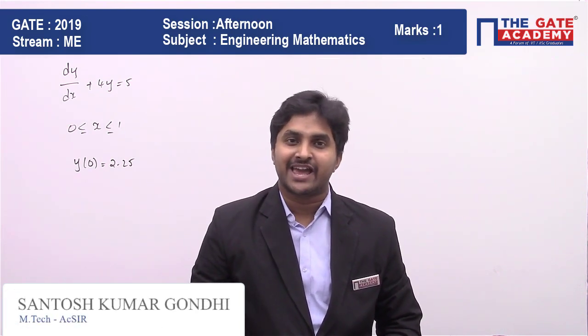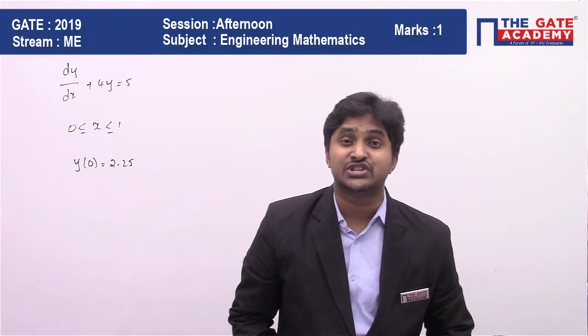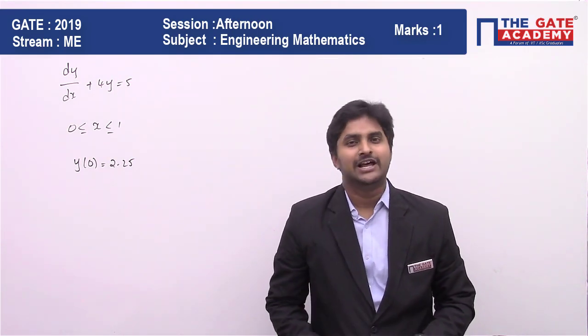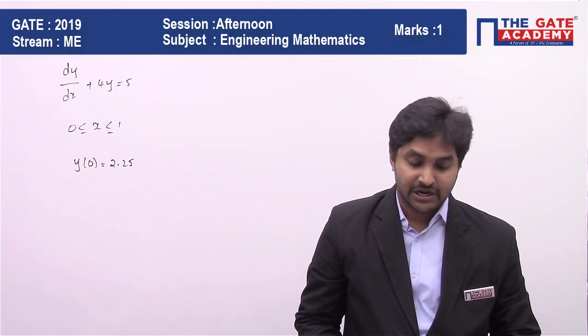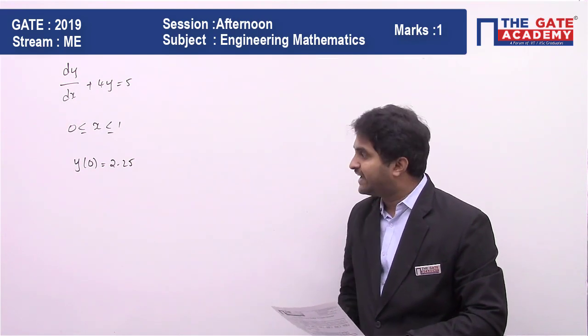In this video we're going to look at an Engineering Mathematics question from the chapter of differential equations. First of all, let me read the question. The differential equation dy/dx + 4y = 5 is valid in the domain x ranging from 0 to 1 with y(0) = 2.25.